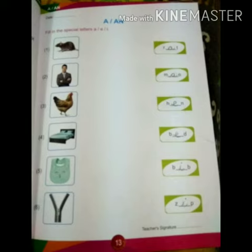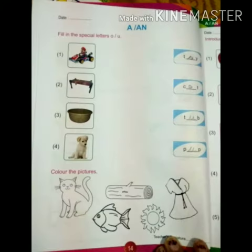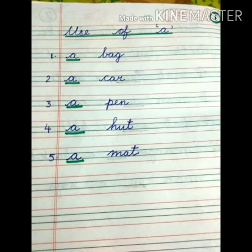Fifth: b-i-b, bib. Sixth: z-i-p, zip. You will do it. Now turn to page number fourteen — fill in the special letters o and u. First one: t-o-y, toy. Second: c-o-t, cot. Third: t-u-b, tub. Fourth: p-u-p, pup. You will do these pages and you will do this work in your copy.